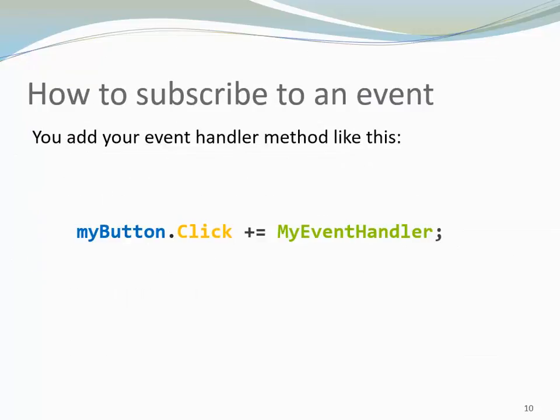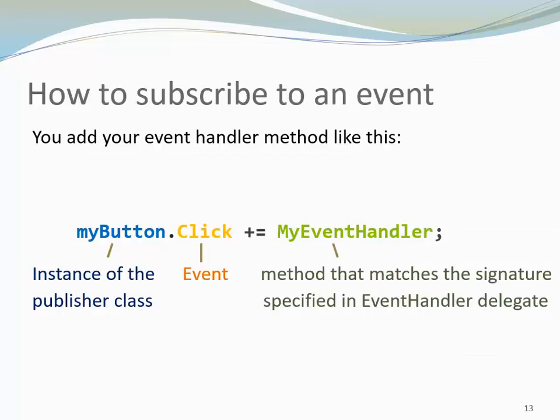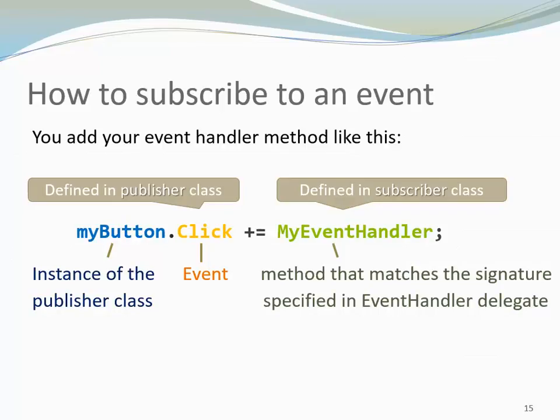Let's look at an example. You can subscribe to an event by adding an EventHandler method like this: MyButton.Click += MyEventHandler. MyButton is an instance of the publisher class. Click is the event. MyEventHandler is a method that matches the signature specified in the EventHandler delegate. The click event is defined in the publisher class. The method that handles the event is defined in the subscriber class.